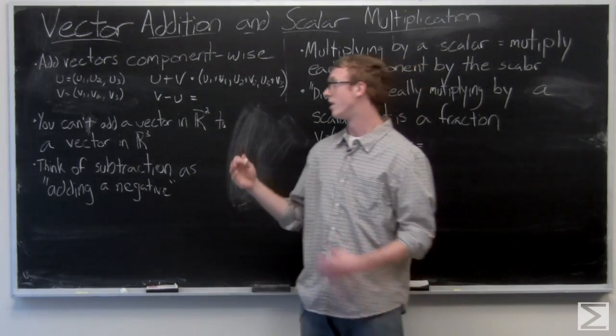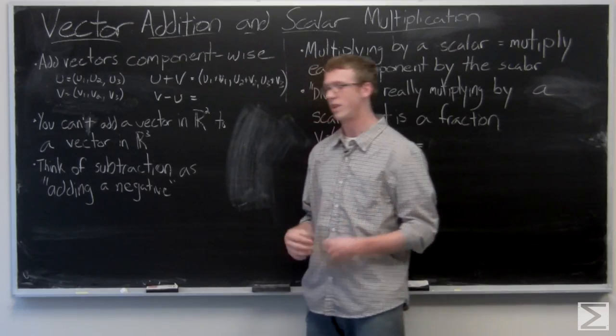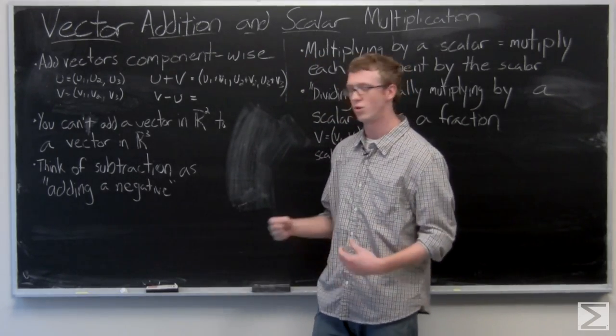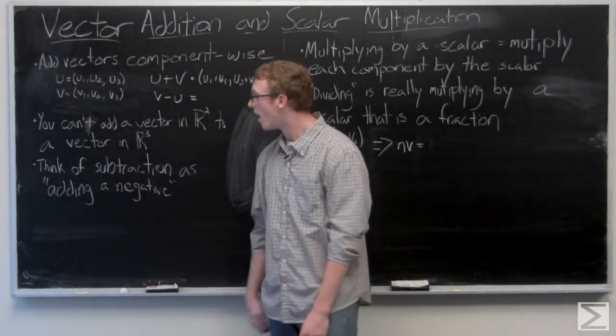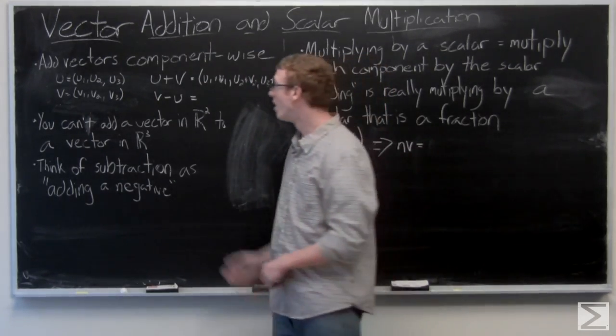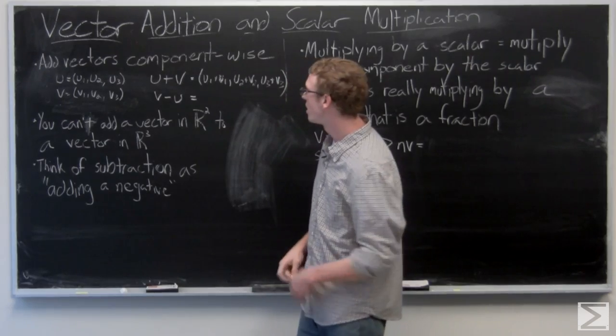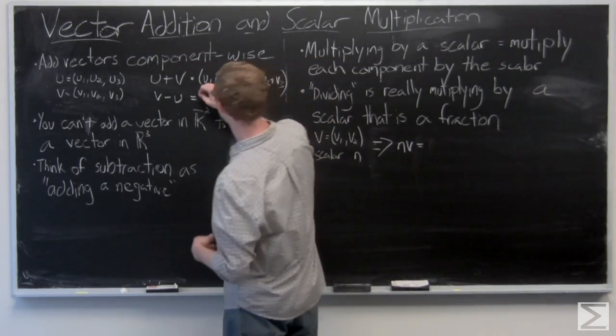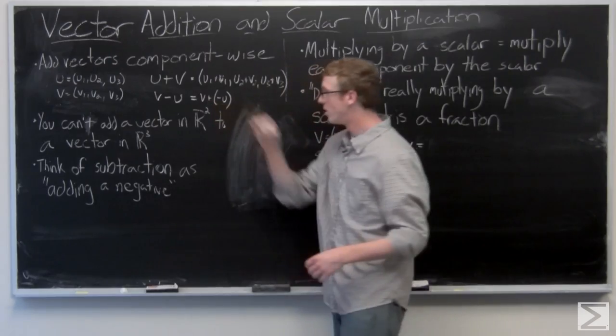Now you can't add a vector in R2 to a vector in R3. That makes a lot of sense. You can't add a vector in two space to a vector in three space. And we want to think of subtraction of vectors as adding a negative. So I have v minus u here. Instead of v minus u, we're going to do v plus negative u.